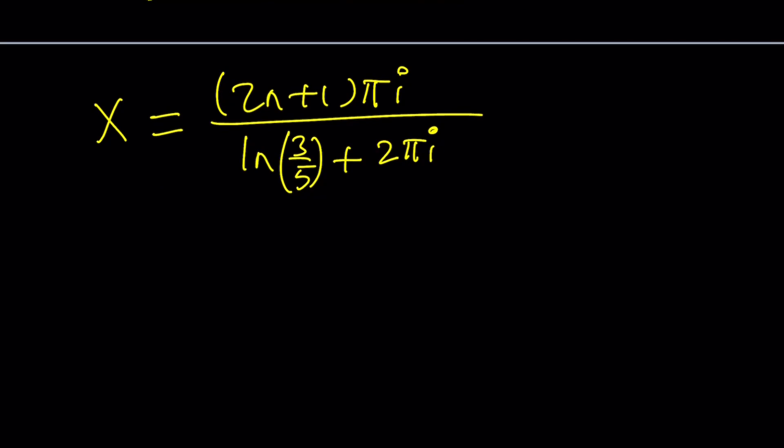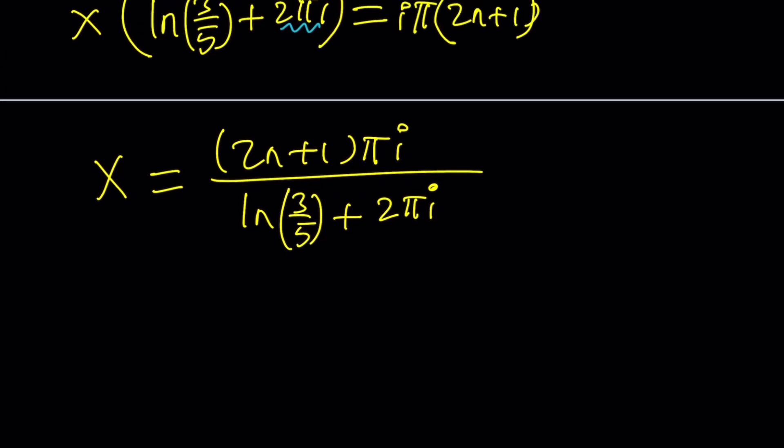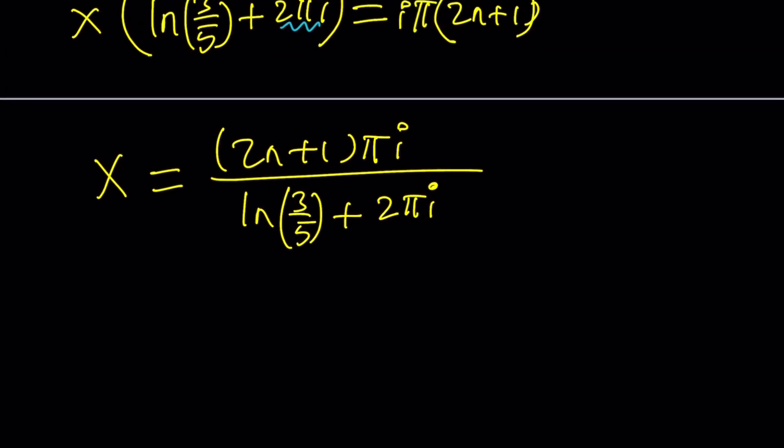Now, notice that we have a complex number at the bottom. So, you want to get rid of that. So, multiply by the conjugate. That's going to be ln 3 over 5 minus 2 pi i. And the numerator is going to be multiplied by the same thing. And then, in the numerator, you're supposed to distribute, multiply. And this is purely imaginary. So, basically, you have a real number and a complex or imaginary number.